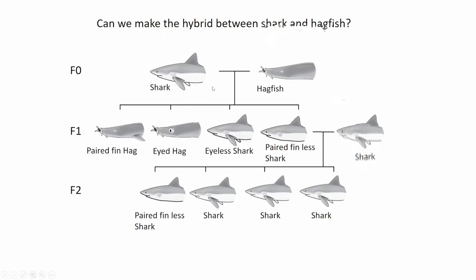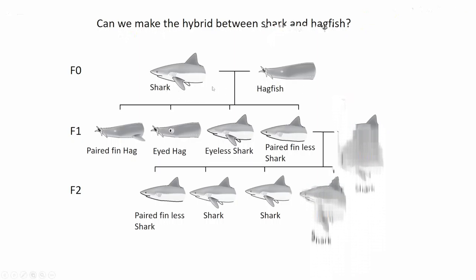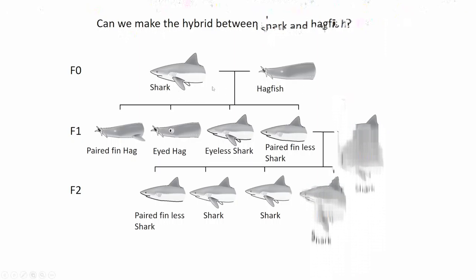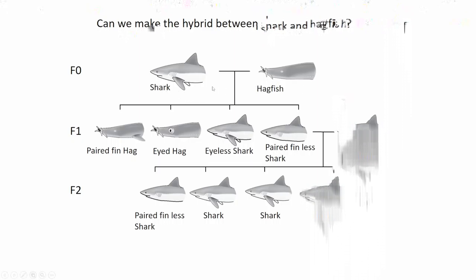Now I'm interested in the developmental systems and large-scale morphological changes, how they are related — that is one of the big topics in my laboratory. Now I'm using goldfish because they are the same species, Carassius, but the morphological diversity is really nice. The ornamental goldfish strain contains so many morphologically highly diverged strains.